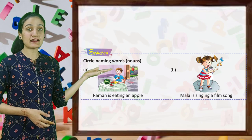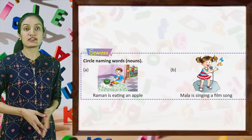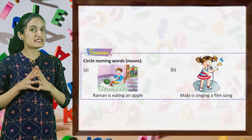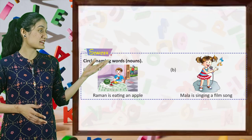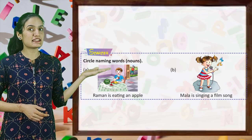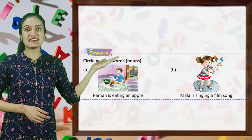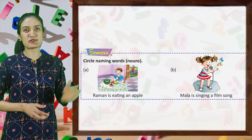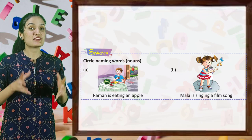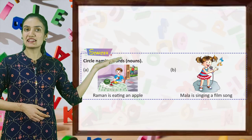Here are some pictures. Circle the naming words, that is nouns. Raman is eating an apple. Mala is singing a film song. So kids, you have to circle the nouns.